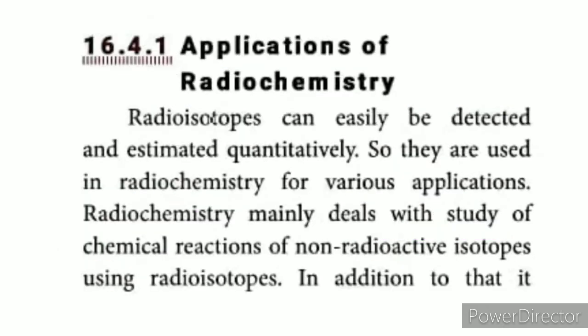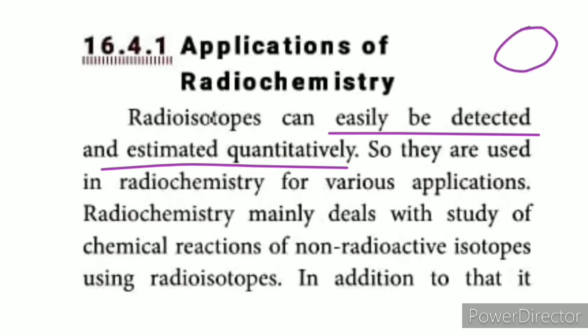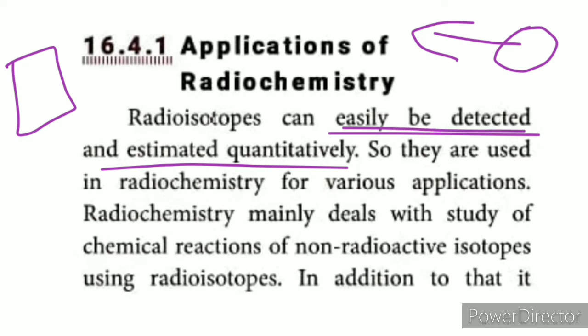The applications of radiochemistry include: radioisotopes can be easily detected and estimated quantitatively. Radiation detection is important — for example, when a nuclear power reactor is damaged. The Chernobyl disaster and the 2011 tsunami in Japan damaged nuclear power reactors, causing radiation to spread in the surrounding areas. Radioisotopes can be detected and quantitatively measured in such situations.